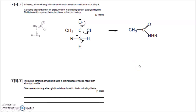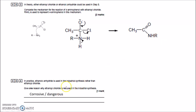Ethanoic anhydride is used in industrial synthesis rather than ethanoyl chloride — give two reasons. Ethanoyl chloride is corrosive and dangerous: it gives off white steamy fumes of hydrogen chloride gas, which dissolves in moist tissues such as lungs forming hydrochloric acid — a very toxic gas. Additionally, ethanoyl chloride is more expensive than ethanoic anhydride, which is a key reason for preferring the anhydride in industrial synthesis to save money.